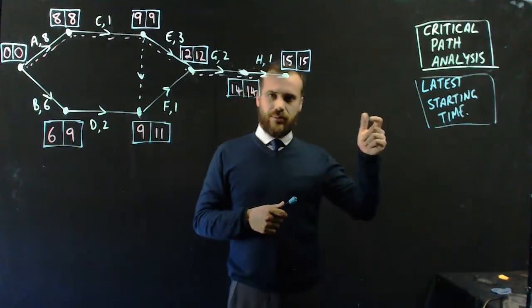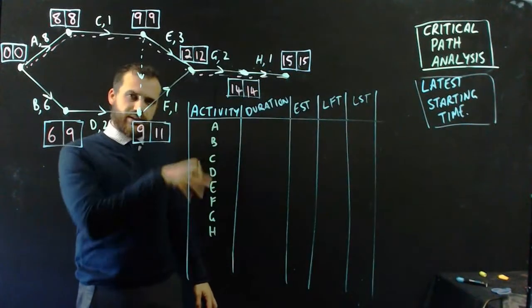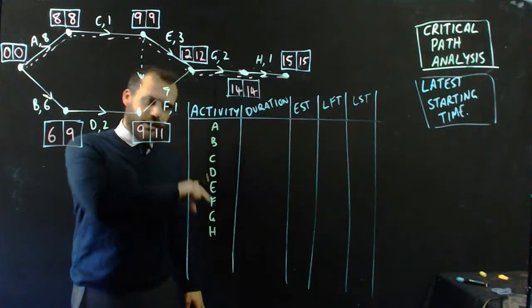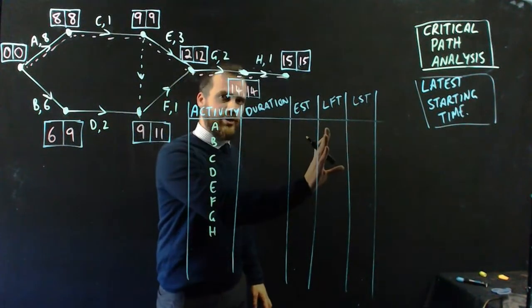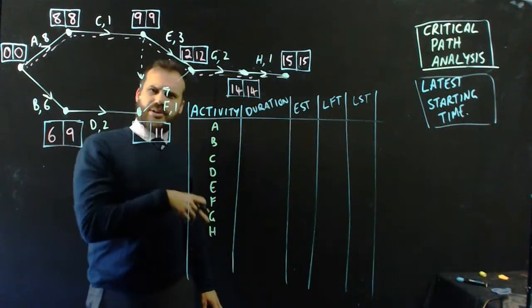All right, let's do our latest starting time. We're going to get started by creating a table. So here we have our table, activity A all the way down to H. Duration, earliest starting time, latest finishing time, latest starting time.